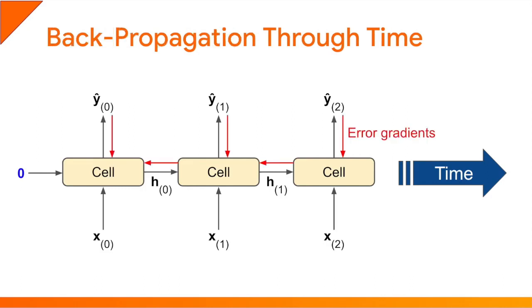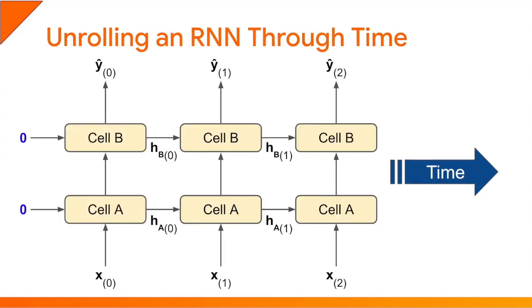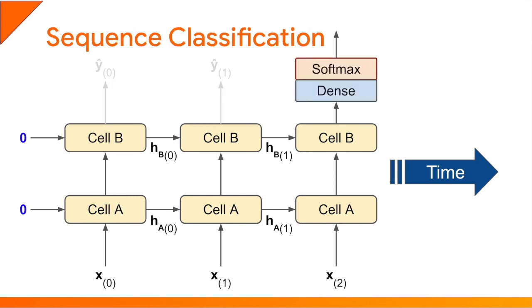This is how RNNs are trained: they are unrolled through a number of timesteps and then trained like normal feedforward networks using backpropagation, with gradients flowing back through the network and through time. Here's what a deep RNN looks like when unrolled through time — to be clear, there are just two cells, not six; it's the same two cells reused at each timestep. To perform sequence classification, we feed in the sequence and ignore all the RNN's outputs except for the last one, which goes through a dense layer with one unit per class and the softmax activation function. This is called a sequence-to-vector model.